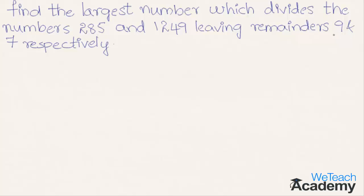Now let us subtract 285 and 9 — we get 276. And by subtracting 1249 and 7 we get 1242. Now let us find the greatest common divisor of these two numbers.